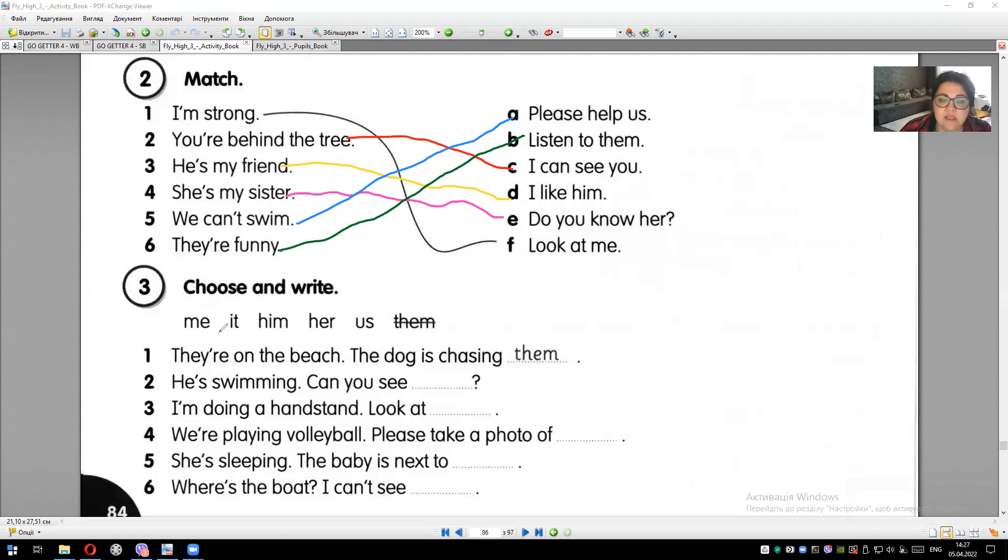Me - me, it - it, for animals or things. Him - him, her - her, us - us, them - them. Let's work on this exercise. Be careful, I'll help you.